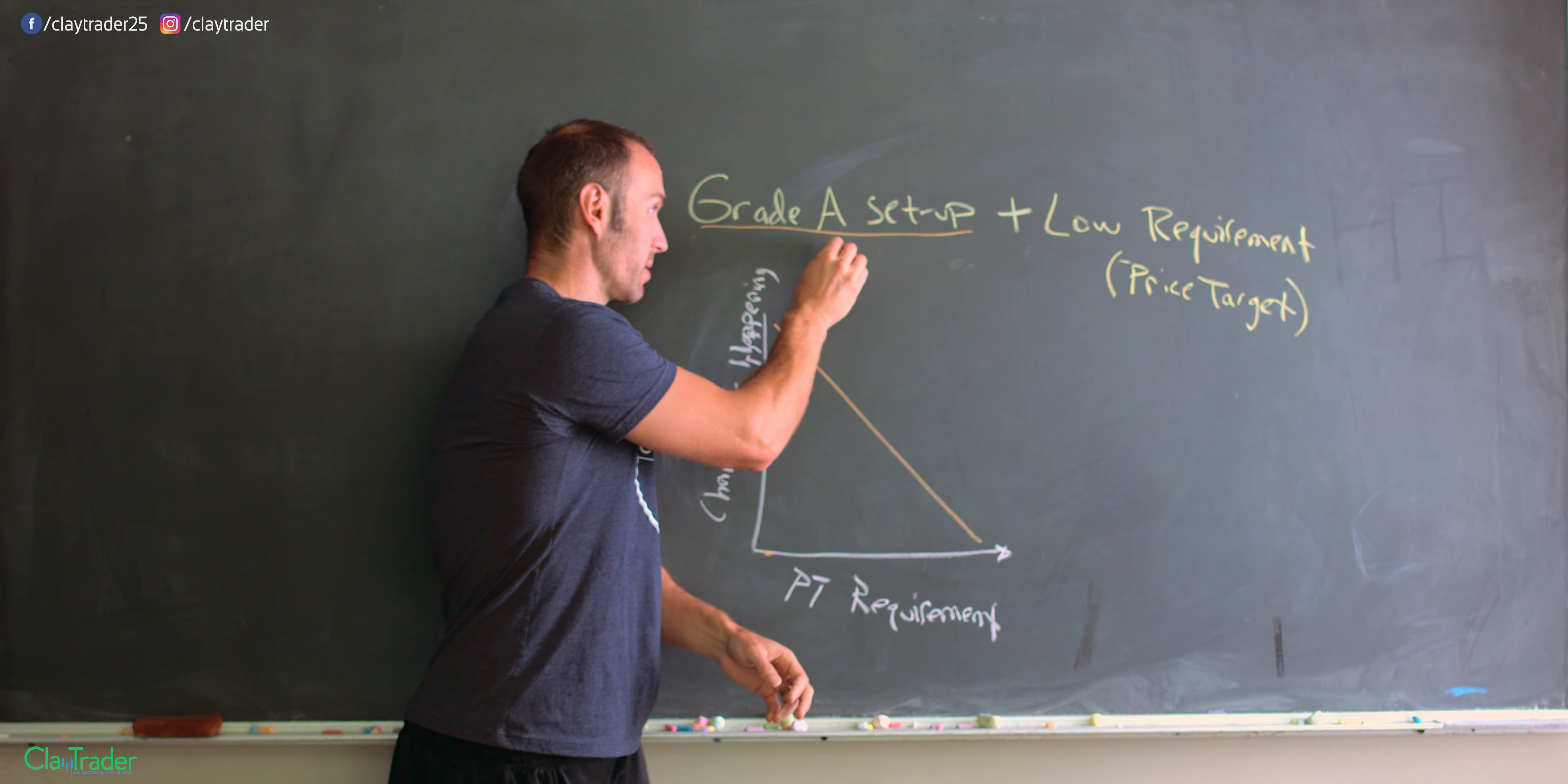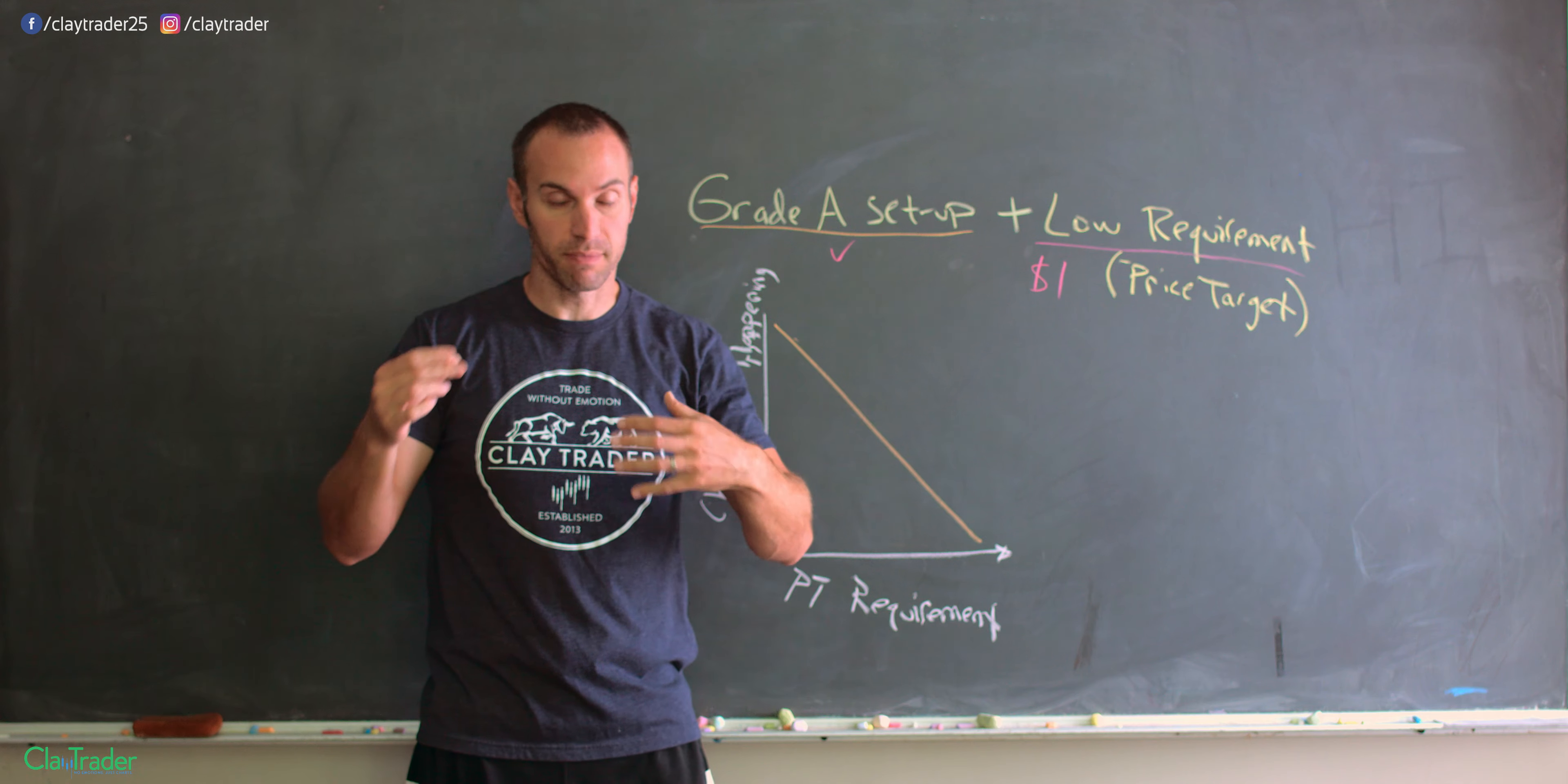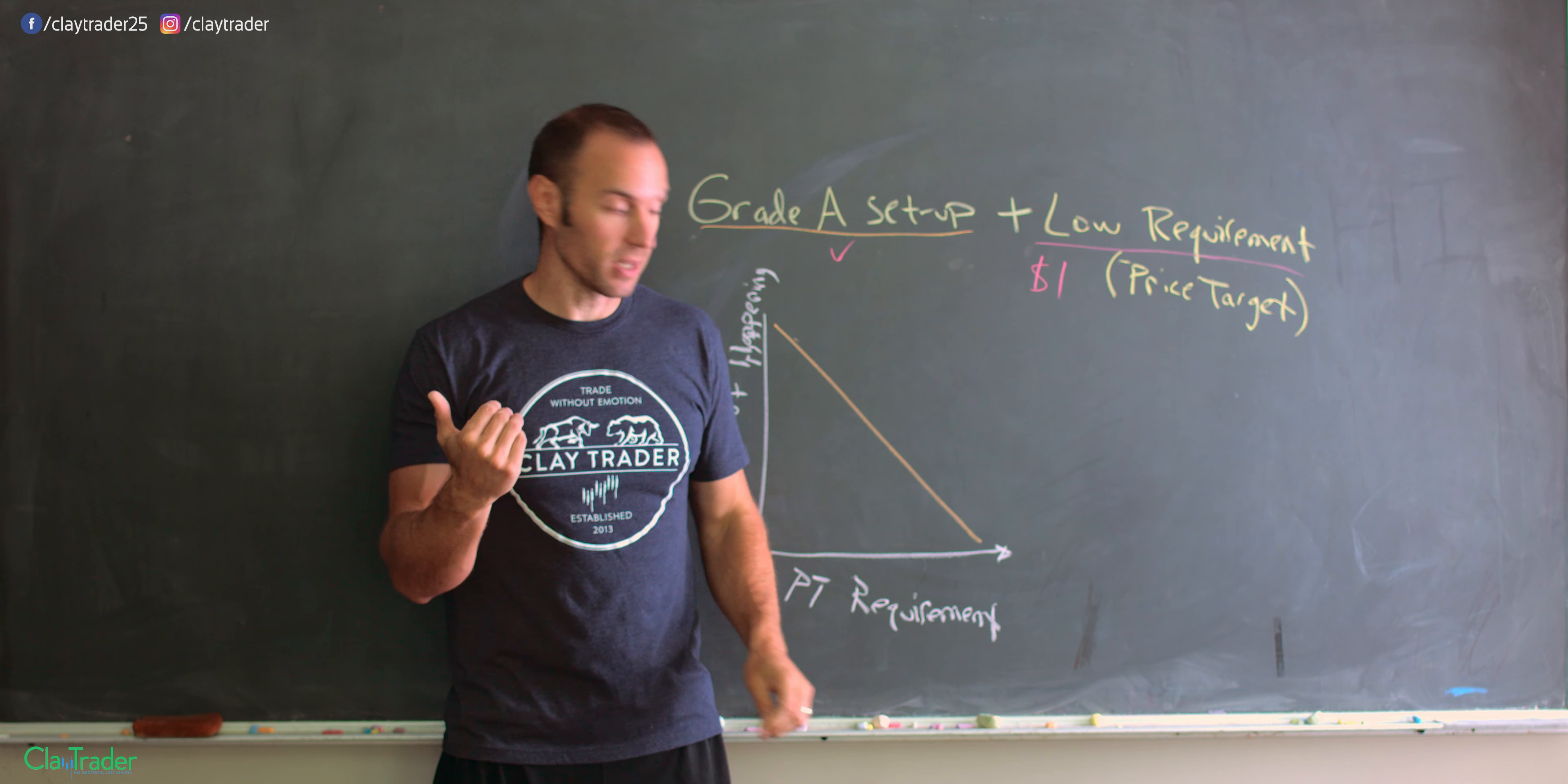The point is I located the grade A setup. I put just a $1 per share price target on it, which was in my mind very modest and proved out to be very true. You saw it just like that - sniper shot, boom - got the $500 plus in my pocket in under 10 seconds.